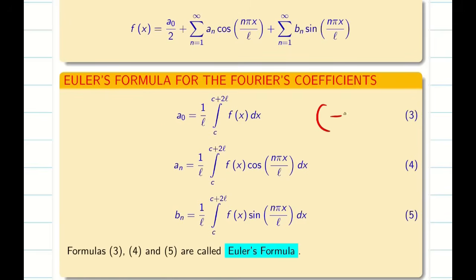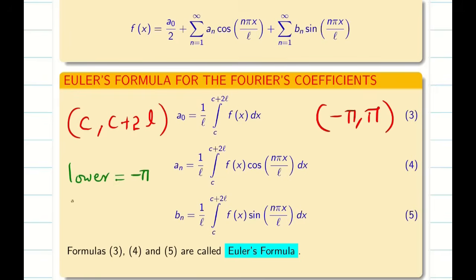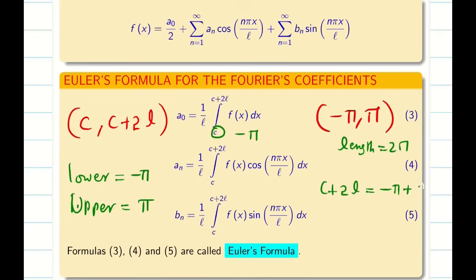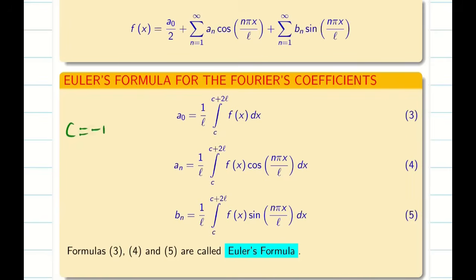Our concern now is minus pi to pi. In this general formula for c to c plus 2l, the lower limit c is replaced by minus pi and the upper limit c plus 2l is replaced by plus pi. The length is 2 pi, so the half length l is replaced by pi. Therefore c plus 2l becomes minus pi plus 2 pi which gives plus pi as the upper limit.